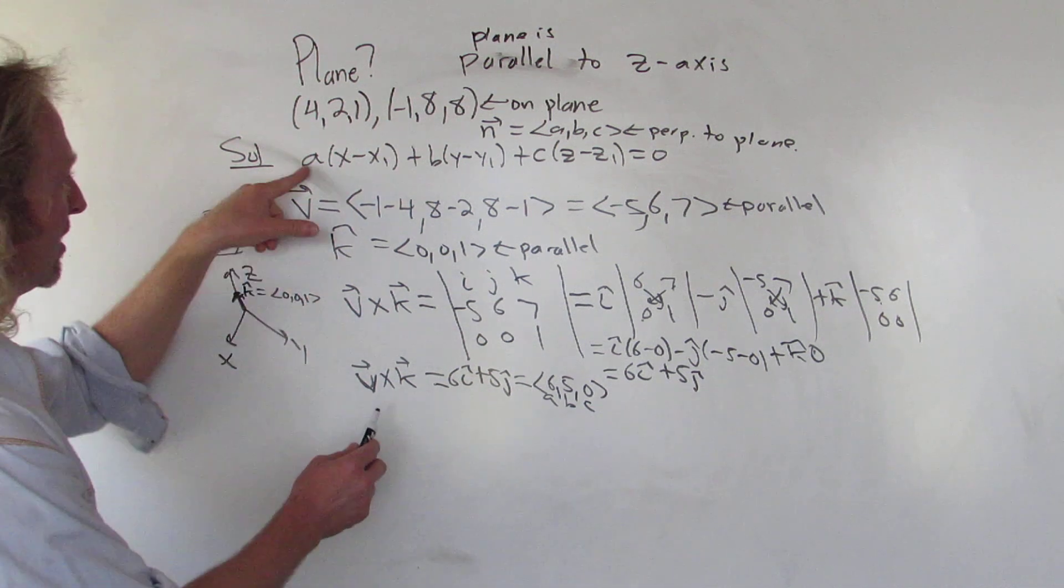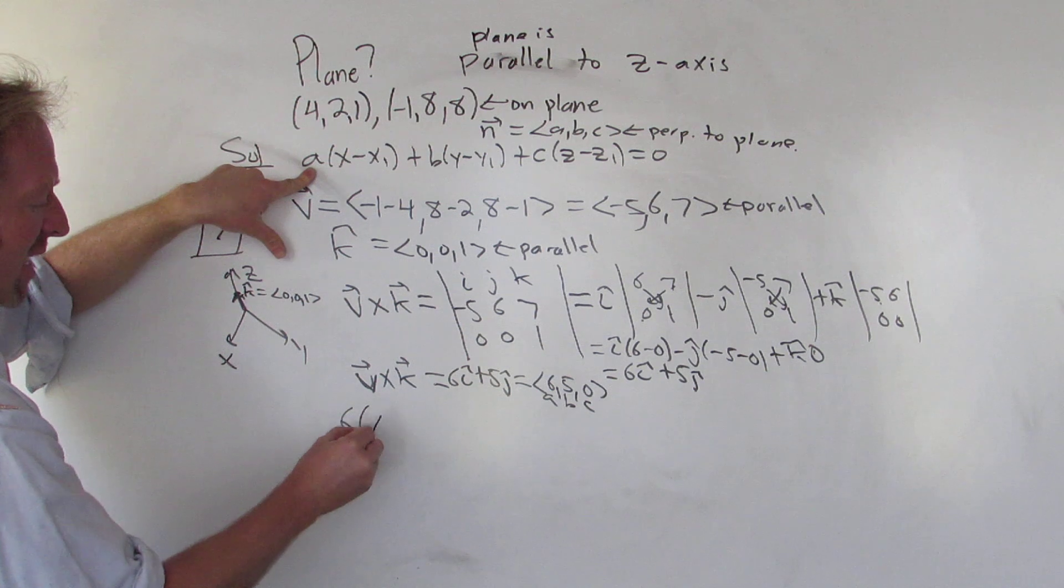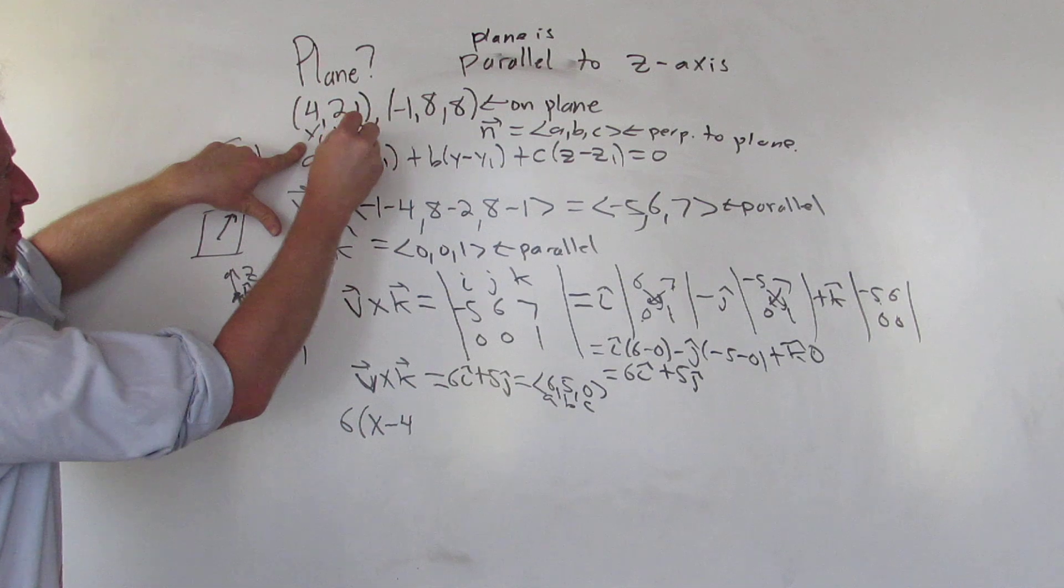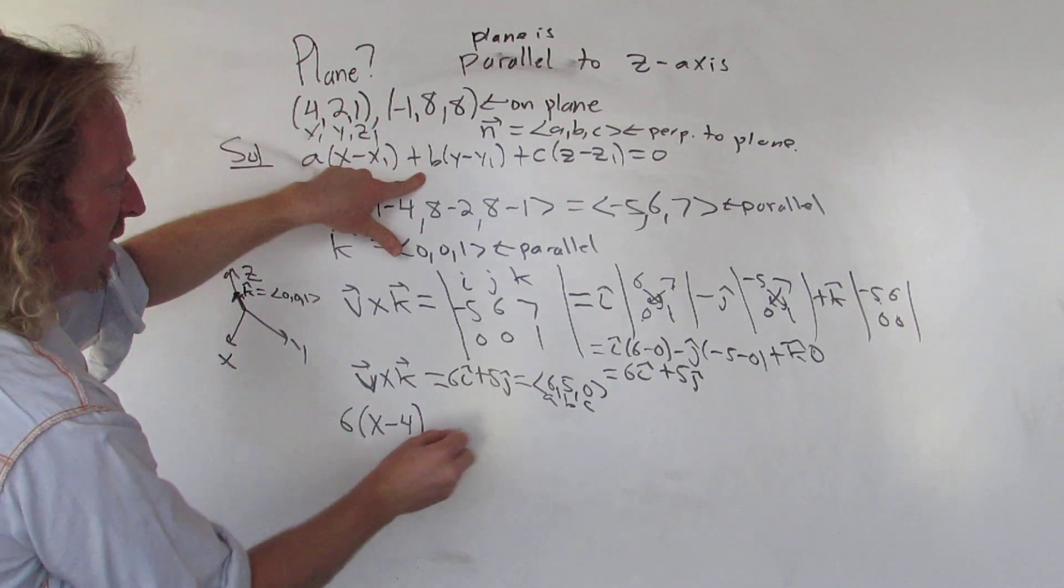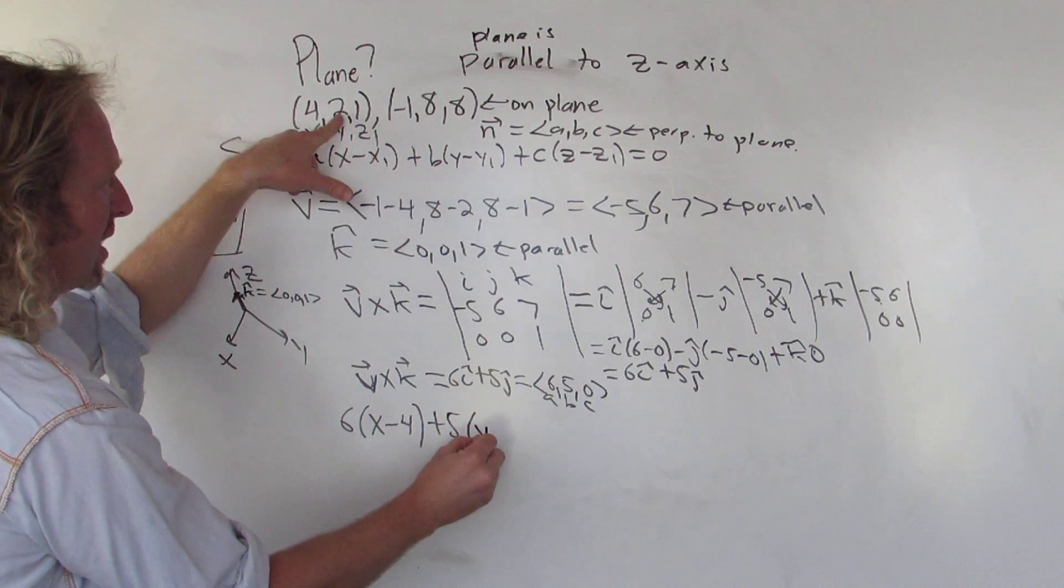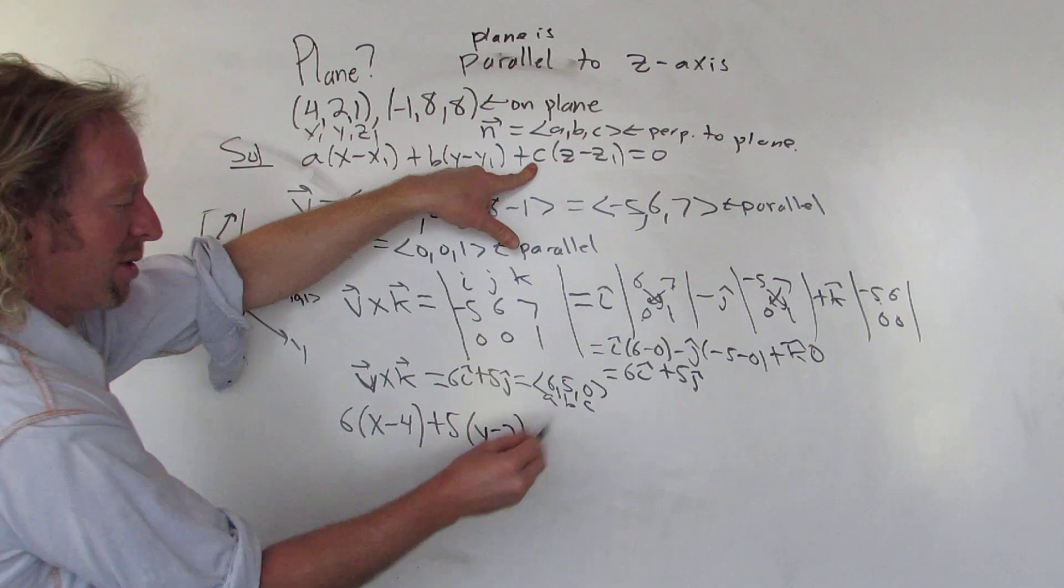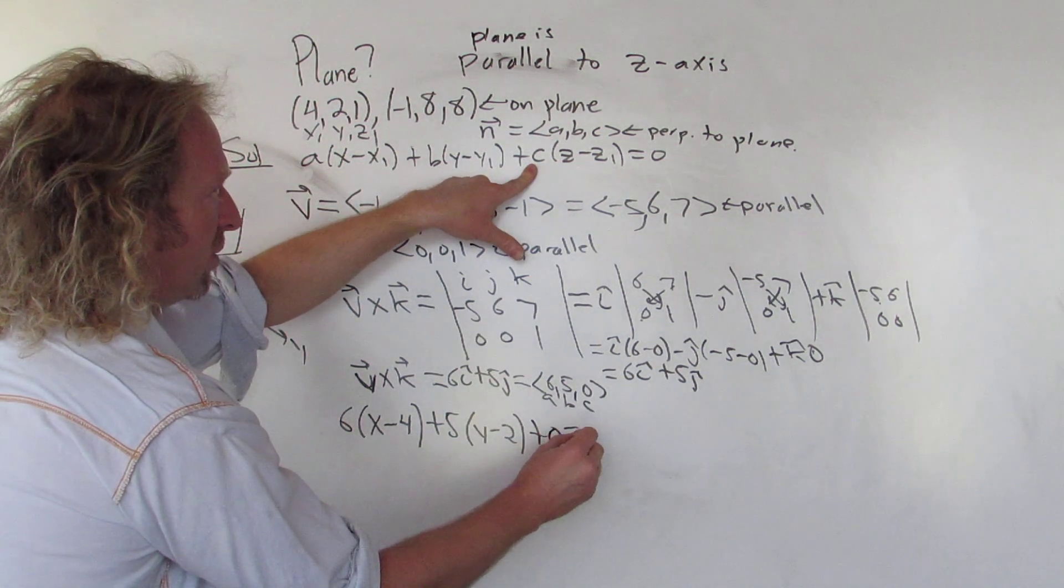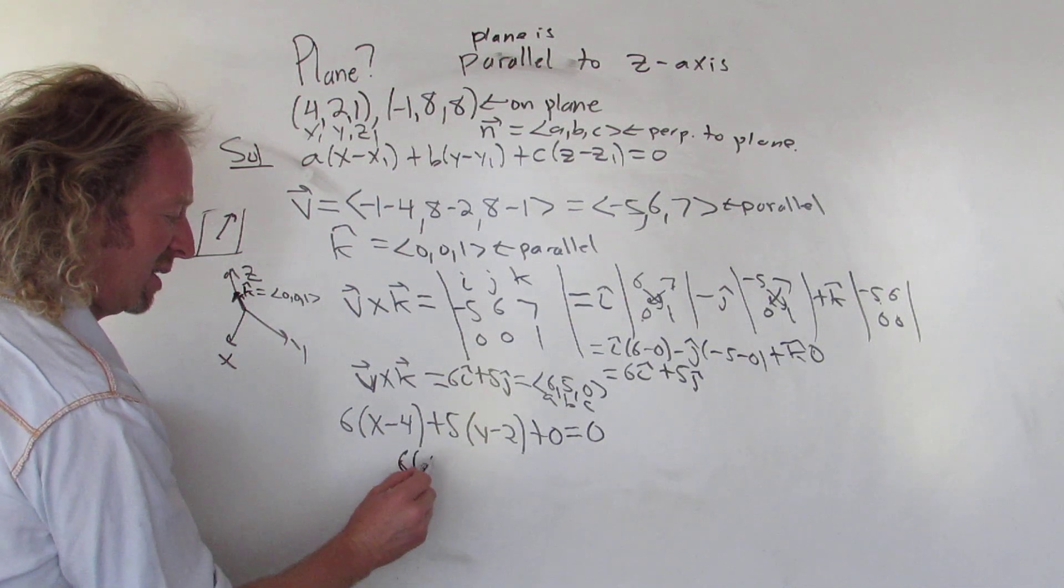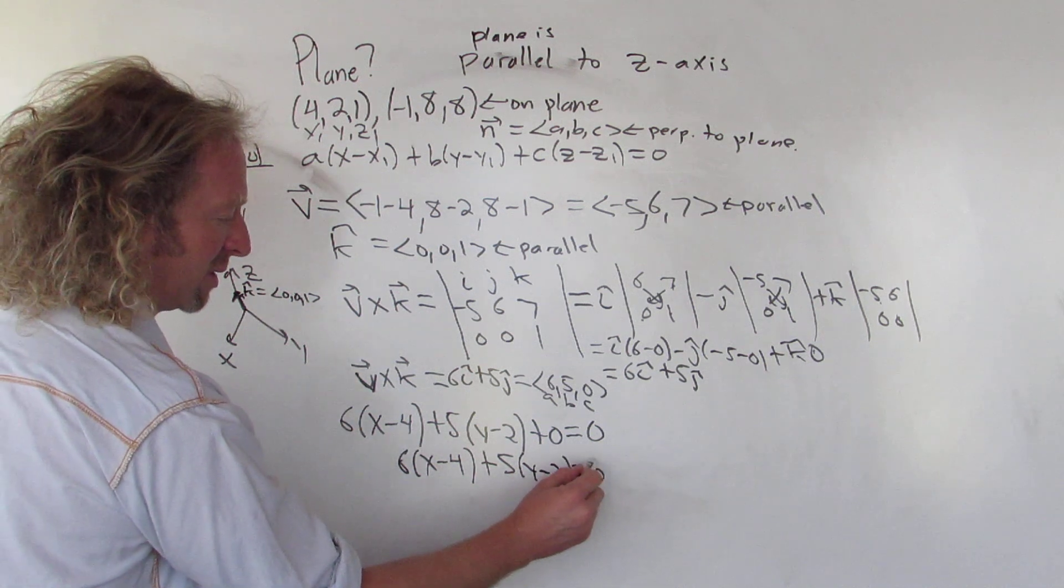I think I can squeeze it in down here. Let's see. So a, a is 6. Then we have x, and then let's use this one. So x minus 4. So we're going to use this one. x1, y1, z1. And then b, b is 5. So 5. And then it's y minus 2. Be really careful here. I've messed up here so many times. And then c is 0. So I'm not even going to run. I'm just going to put 0. And that's equal to 0. So this will be 6(x - 4) + 5(y - 2). And that's equal to 0.